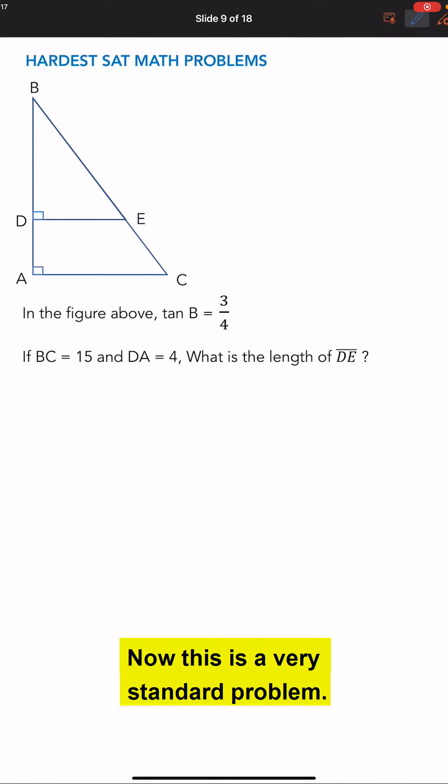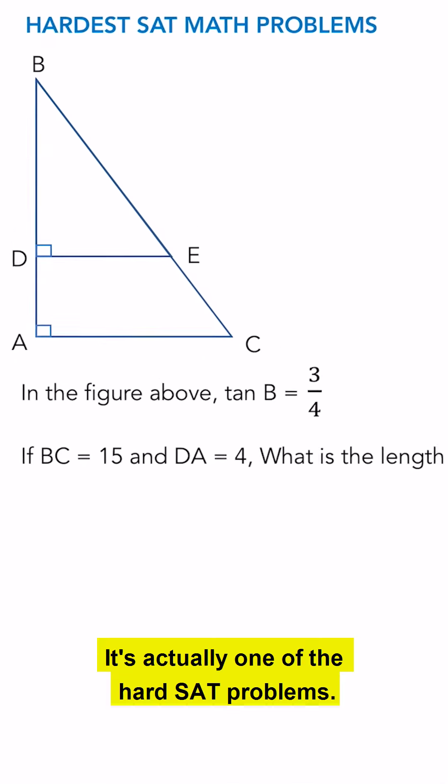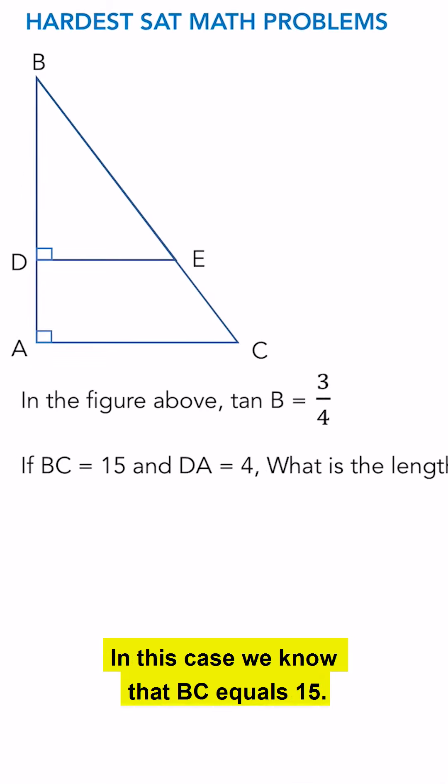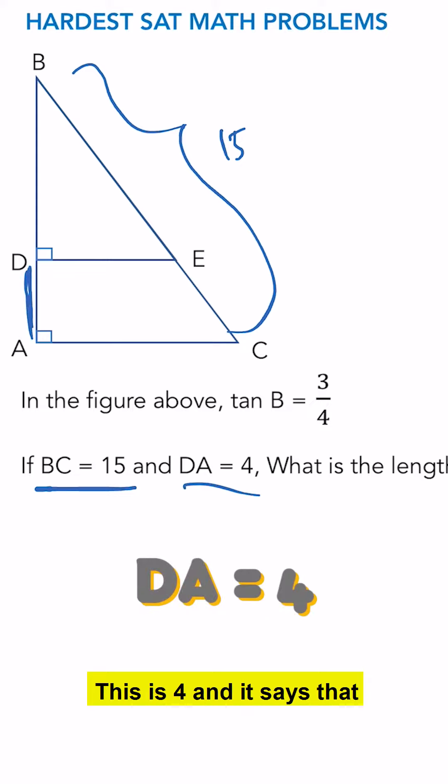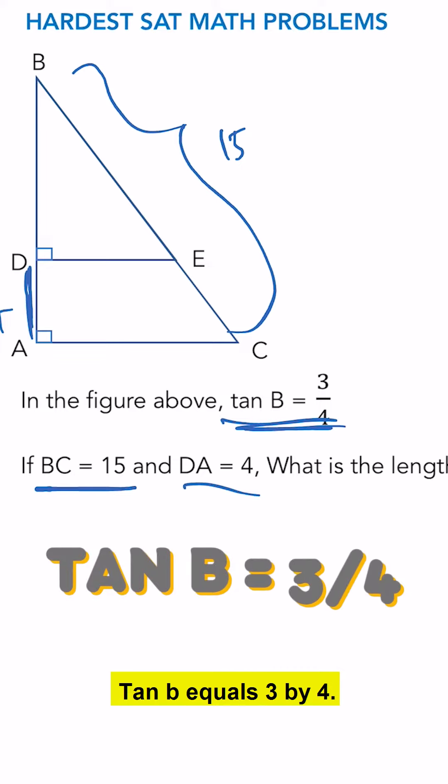Now, this is a very standard problem. It's actually one of the hard SAT problems. In this case, we know that BC equals 15, so this length here is 15. And it says DA equals 4. This is 4. And it says that tan B equals 3 by 4.